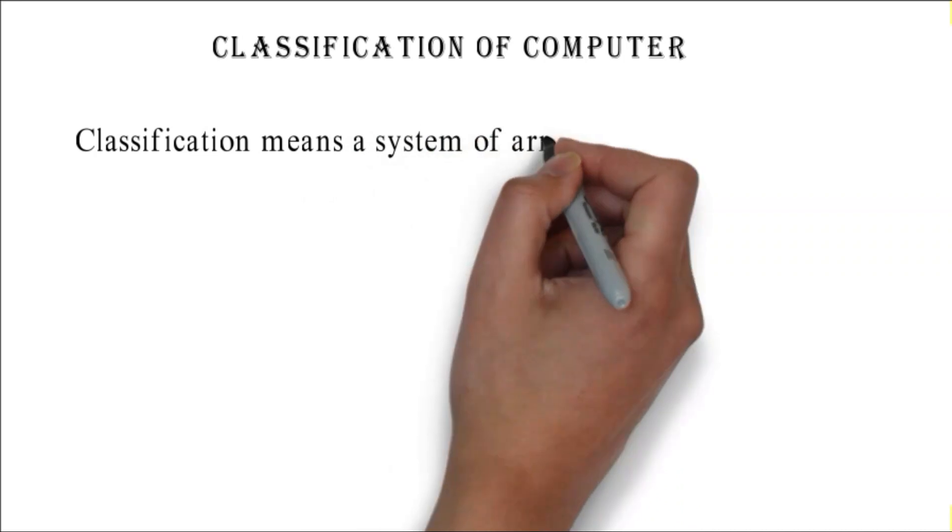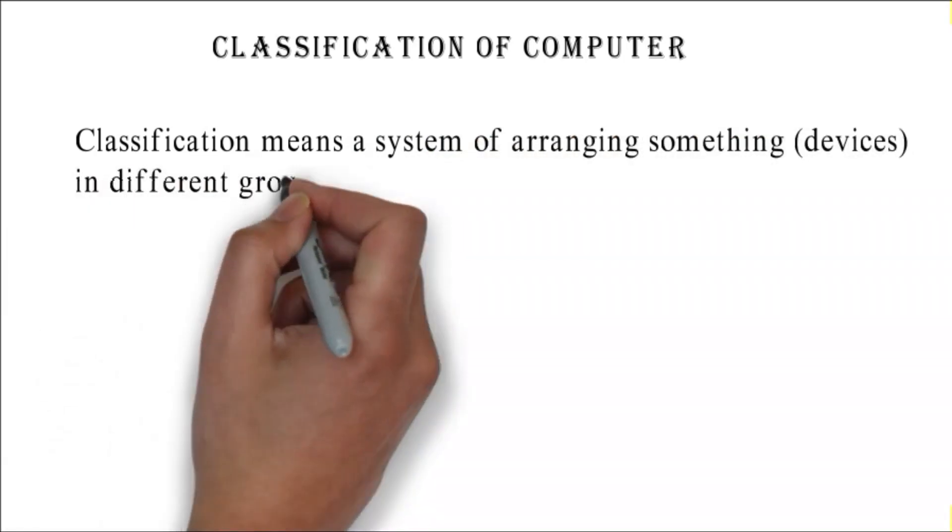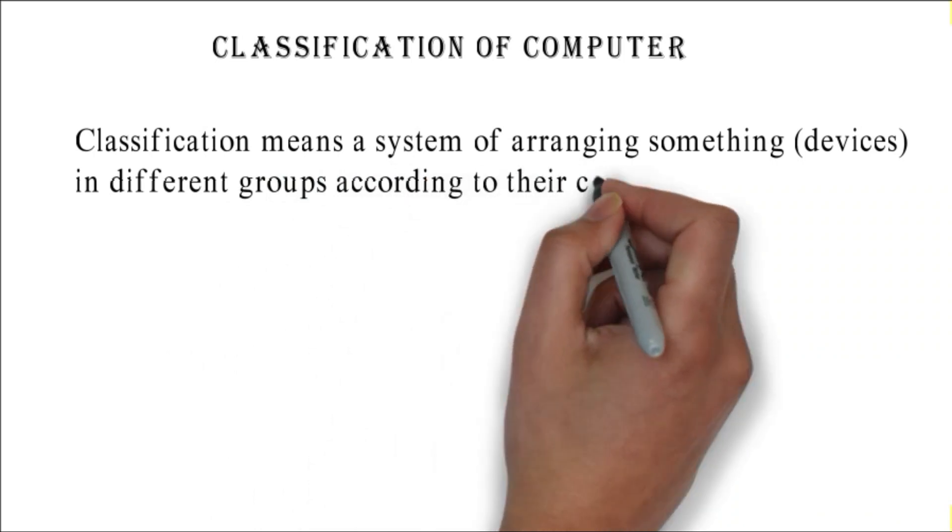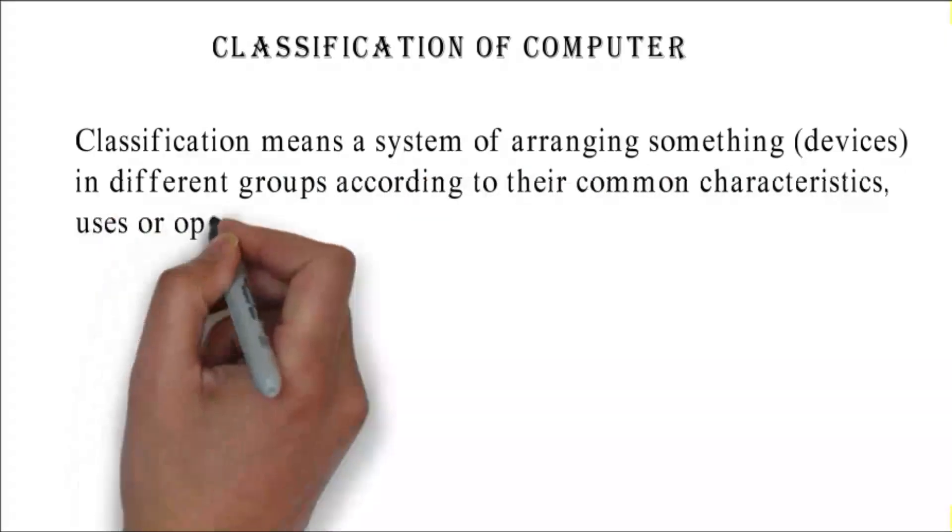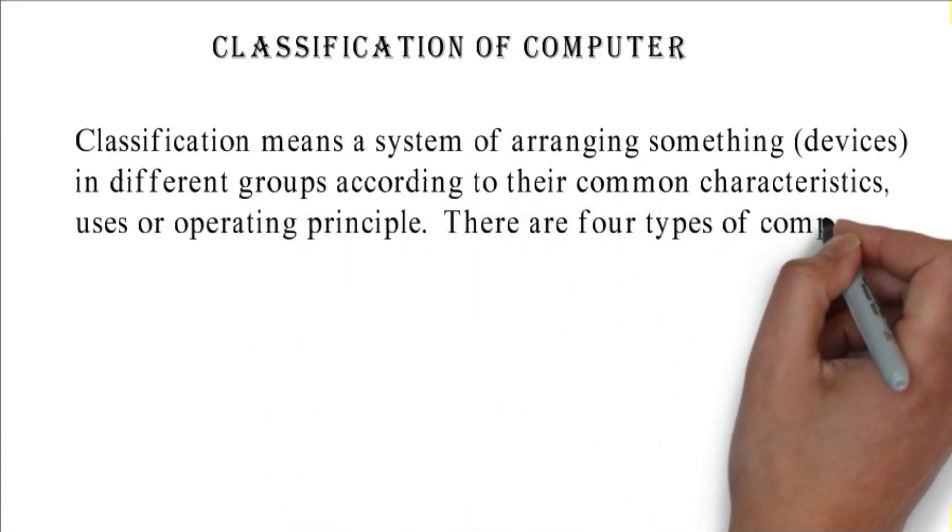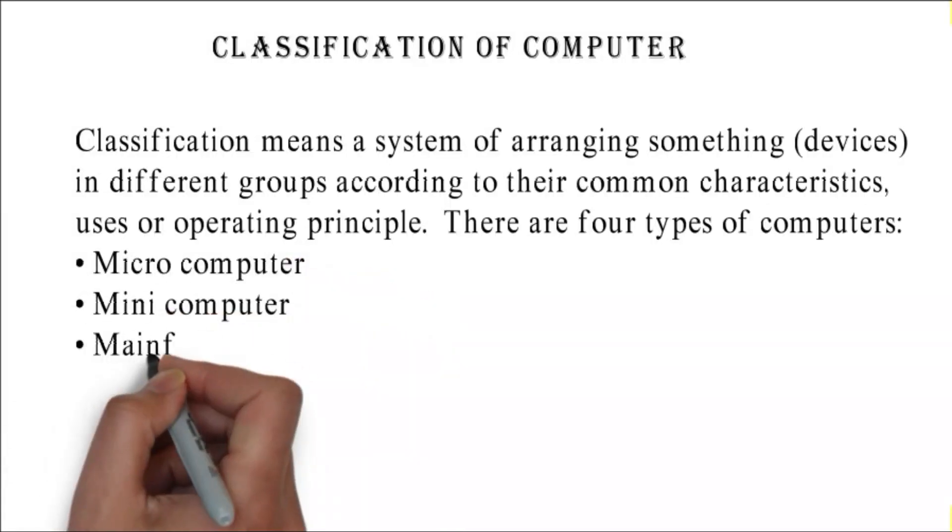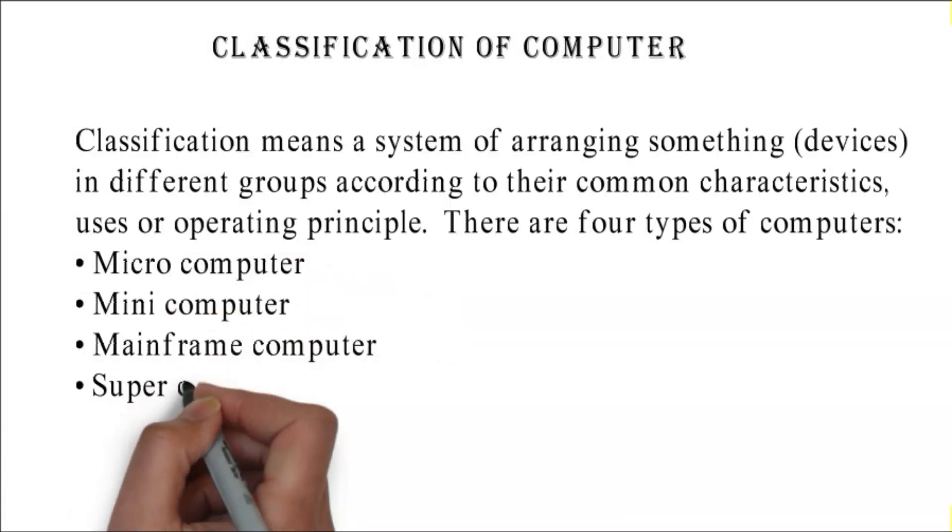Classification of computer: classification means a system of arranging devices in different groups according to their common characteristics, uses, or operating principle. There are four types of computers: microcomputer, mini computer, mainframe computer, and supercomputer.